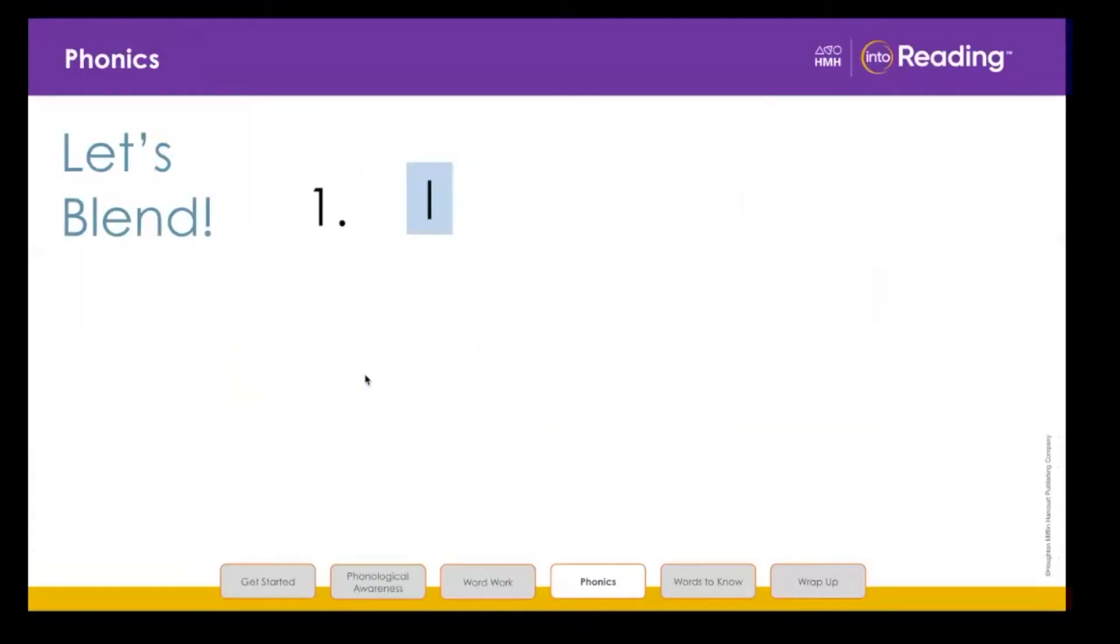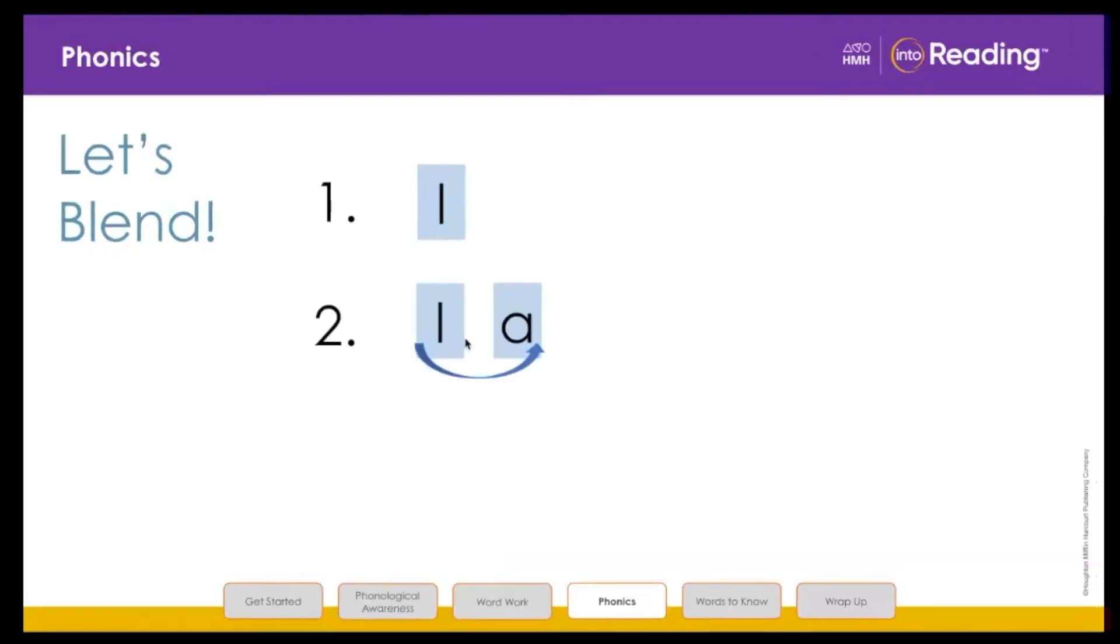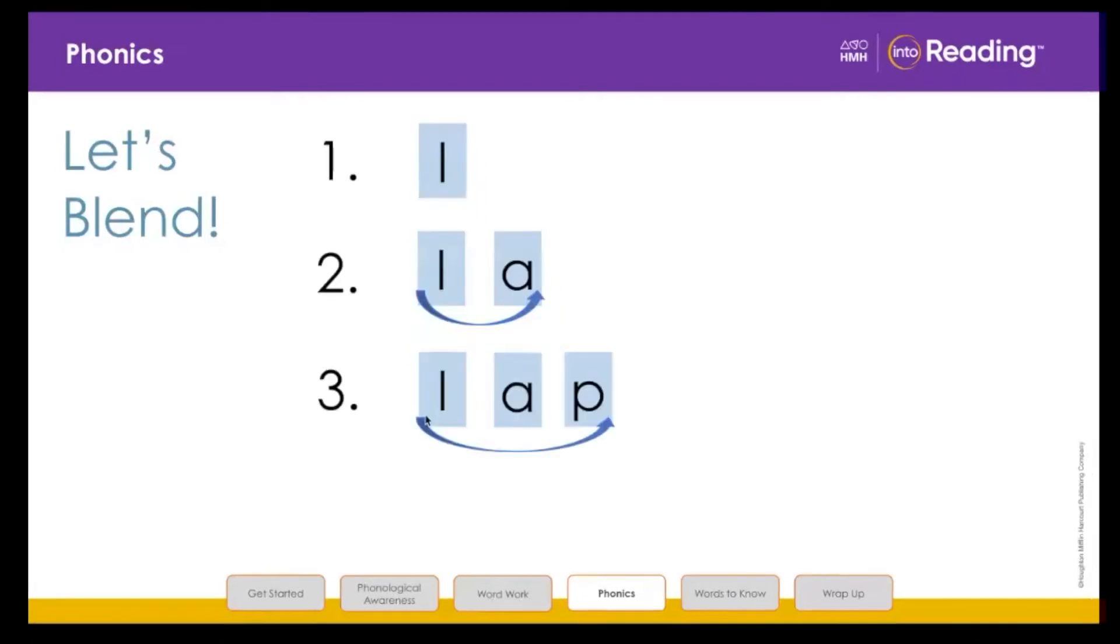Now it's time for us to blend words using the L and H sounds. To blend these words, we're going to say the sounds. And when I say blend, you have to put them together. Watch me. L-a. Blend. L-a-p. Blend. Lap. Yee-haw! The word is lap. The baby sat on her mother's lap.